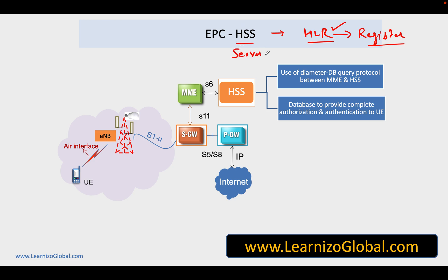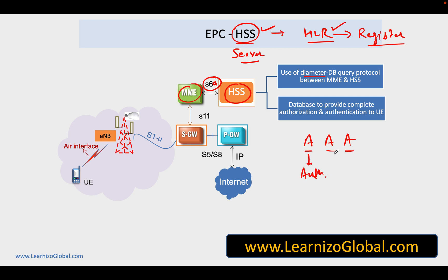That's where we get a new node called HSS, which is referred to as Home Subscriber Server. Typically, MME interacts with HSS over an interface called the S6a interface, and the typical protocol used on this interface is called Diameter. Diameter is also referred to as Triple-A protocol, where Triple-A means Authentication, Authorization, and Accounting.